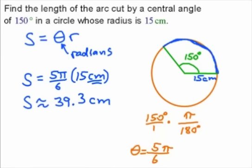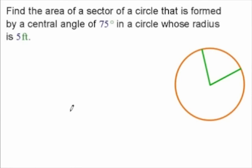Alright, and we can do the same type of thing, finding the area of a sector of a circle that is formed by a central angle of 75 degrees, and a circle whose radius is 5 feet. In this case, we're going to have to kind of develop a formula for it. So I'm going to call it A sub sect.